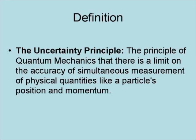The uncertainty principle is the principle of quantum mechanics that there is a limit on the accuracy of simultaneous measurement of physical quantities, like a particle's position and momentum.